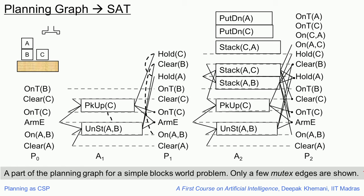We can also, like we did in the case of CSP, take a planning graph and convert it into a SAT problem. This is what a planning graph looks like. The planning graph is constructed in a forward fashion, and here we have constructed two stages. For example, there is the no-op operation which says that on-t-b was true in the initial state and remains true in the first layer and gets carried forward, because you are taking a union of all possible actions. That is one property of the planning graph — it grows monotonically. Once a variable enters a layer, it stays there.